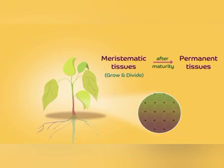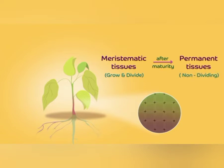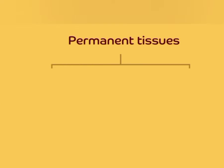Matured means fully developed. So fully developed meristematic tissues are called permanent tissues. They lose their division capacity and they get proper structure and function. There are two main important permanent tissues: the first one is simple tissues and the second one is complex permanent tissues.